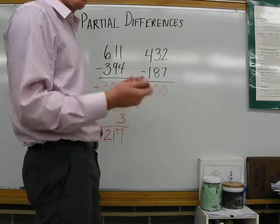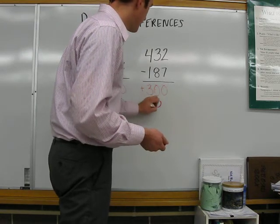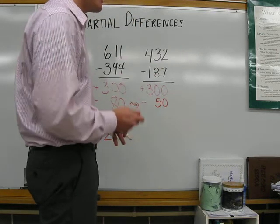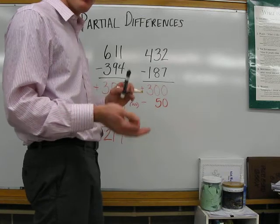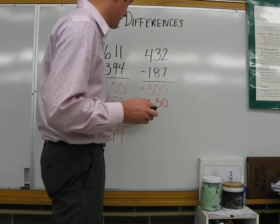3 minus 8, well 8 minus 3 is 5, so it's going to be negative 5. Since it's in the tens place, 5 tens is 50. And then 2 minus 7 is like saying 7 minus 2, which is 5, except we're doing 2 minus 7. And that's going to be a negative 5.